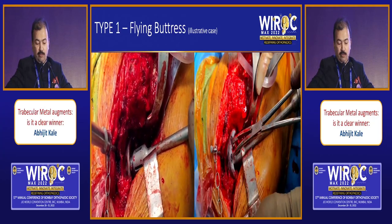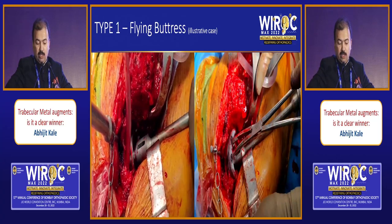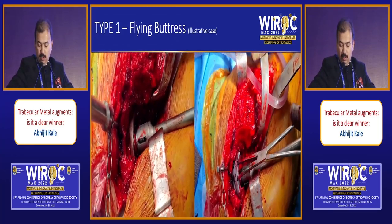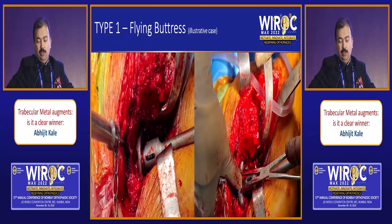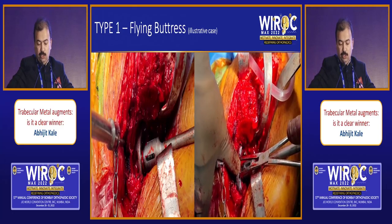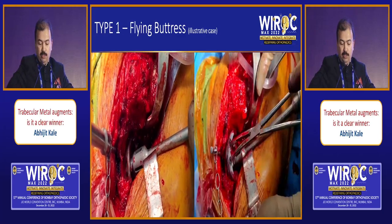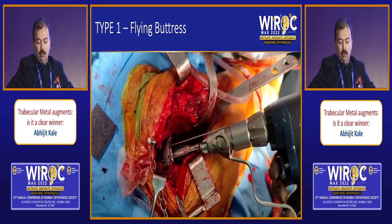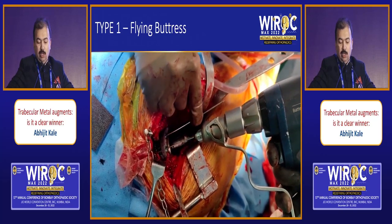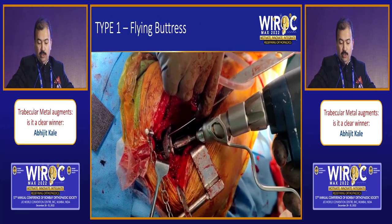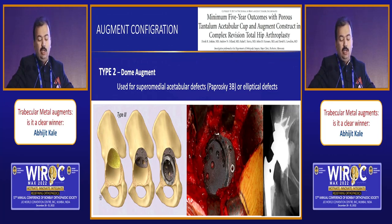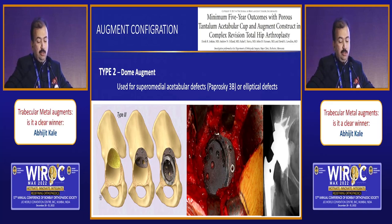When the trial cup is placed, one can appreciate rotational instability and a superolateral defect, so an augment is placed. Only selective size augments are available, starting from size 52, 56, or 62, and you select the one which best fits. The template is initially held with K-wires, over which an augment is placed with the trial cup in situ. Over the guide wires, the augment is fixed with screws, and then the cup is placed to achieve an anteroposterior or multi-axial capture.